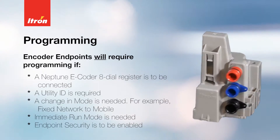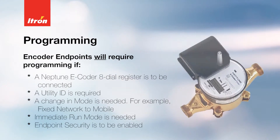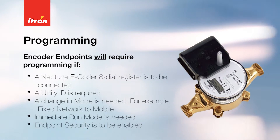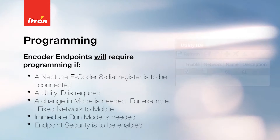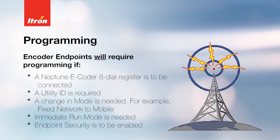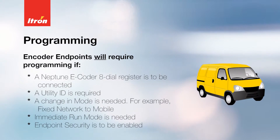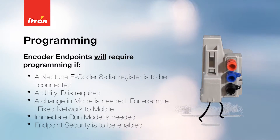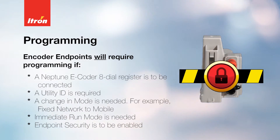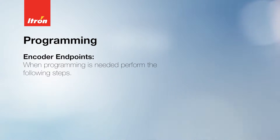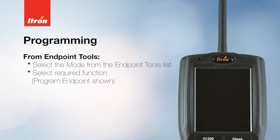Encoder endpoints will require programming if a Neptune ecoder 8 dial register is to be connected, a utility ID is required, a change in mode is needed (for example, fixed network to mobile mode), immediate read mode is needed, or if endpoint security is to be enabled.